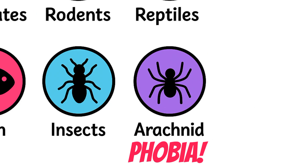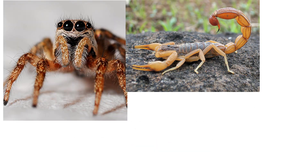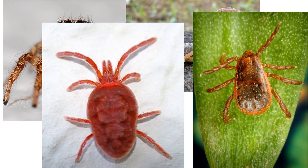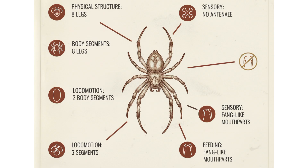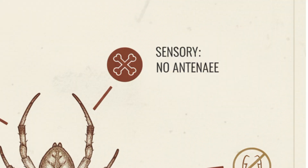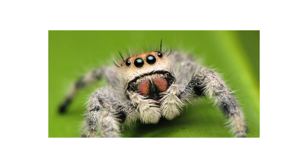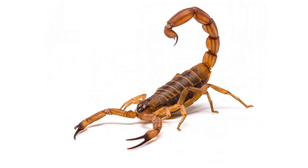Arachnids — the eight-legged ops. Spiders, scorpions, ticks, mites. How to classify an arachnid: if an animal has eight legs, two body segments, no antennae, and fang-like mouth parts — arachnid. Spiders are more scared of you than you are of them. Except scorpions — scorpions walk like they came to collect souls.